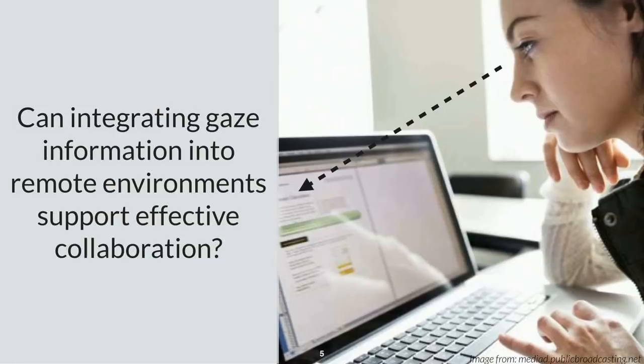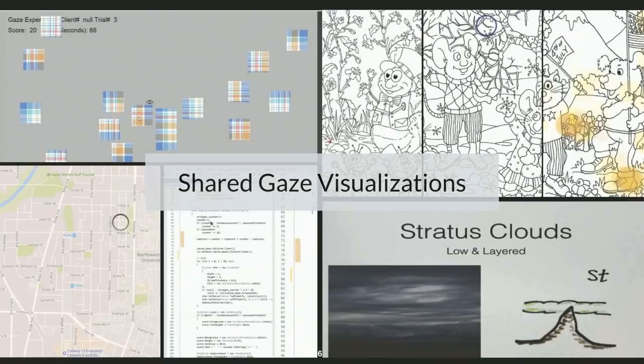This brings me to the question I've been focusing on for much of my dissertation: can integrating gaze information — an important nonverbal cue — into remote environments support effective collaboration? In this example, if you were working with this woman remotely and could see where she was looking in a shared problem, would that help you understand what perspective she's coming from, what area she's focusing on, in a way that helps you communicate about the problem and solve it? Would adding this cue support our ability to collaborate effectively in remote environments, which are becoming increasingly important?